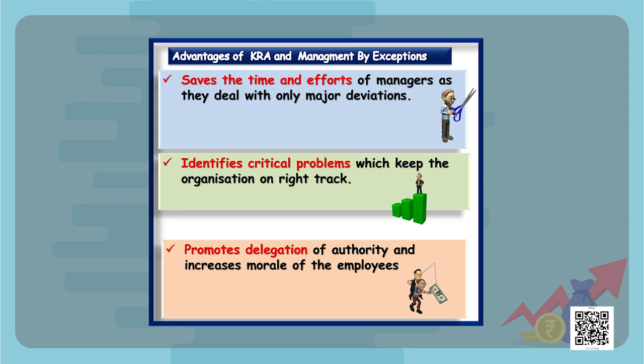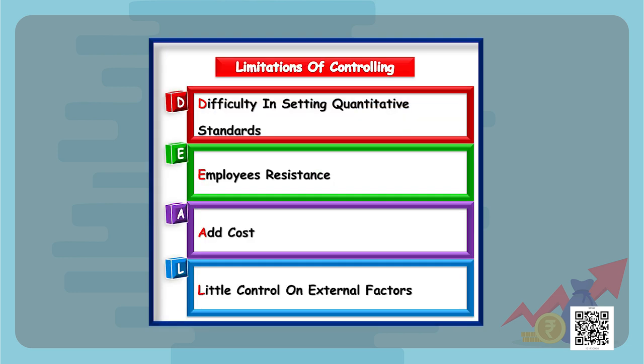The advantages of key result areas and management by exception are: they save the time and efforts of managers as they deal only with major deviations, they identify critical problems which keep the organization on the right track, and they also promote delegation of authority and increase the morale of employees.